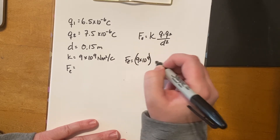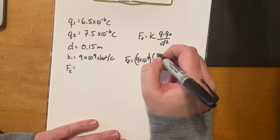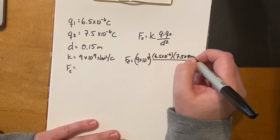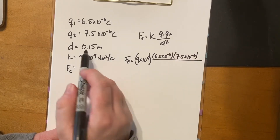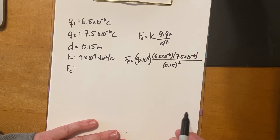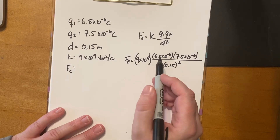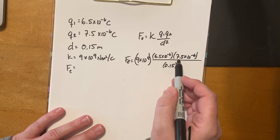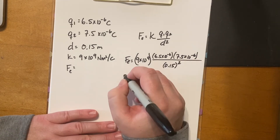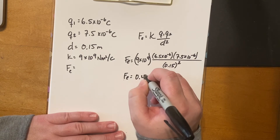We'll keep the units out at this point to keep it clear. In your calculator, use the EE or E button to enter scientific notation. Enter 9 × 10⁹ times 6.5 × 10⁻⁶ times 7.5 × 10⁻⁶, then divide by 0.15 squared — only 0.15 is squared. When you do that, you'll end up with the electric force.